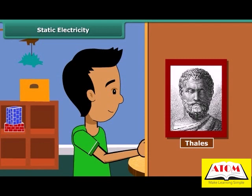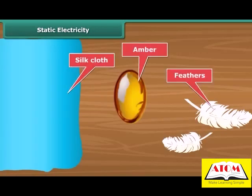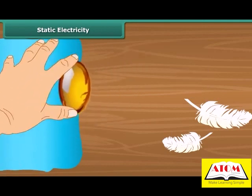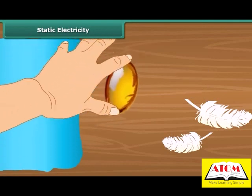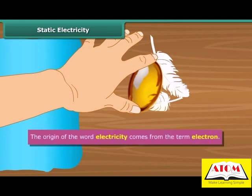Thales found that amber attracted tiny feathers after it was rubbed with silk cloth. This was due to static electricity. The origin of the word electricity comes from the term electron.